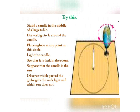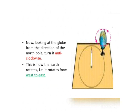Let us try another activity. Stand a candle in the middle of a large table, draw a big circle around the candle, and place a globe at any point on this circle. Light the candle and make sure it is dark in the room. Suppose that the candle is the Sun. Observe which part of the globe gets the Sun's light and which one does not. Now, looking at the globe from the direction of the North Pole, turn it anti-clockwise. Anti-clockwise means against the direction of our clock. This is how the Earth rotates - from west to east.